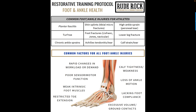Weak intrinsic foot muscles and lacking foot compliance have some overlap, but intrinsic foot muscles are the small muscles that run between the toes and throughout the mid foot and base of the foot. These are primarily responsible for helping the foot to splay, open, and absorb and dissipate ground contact forces efficiently. If we don't have good intrinsic muscles, every time our foot strikes the ground it sends shock waves up the leg, which can contribute to things like fasciitis, turf toe, and in particular shin splints, which are very common in early football phases.